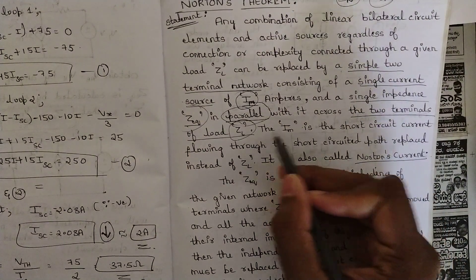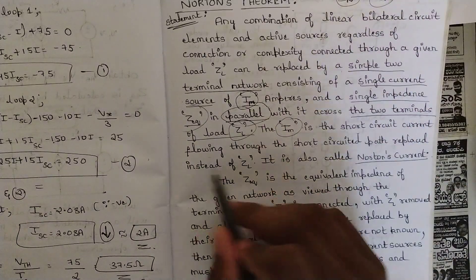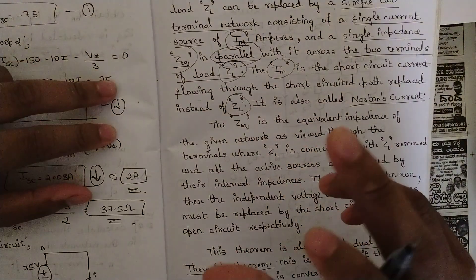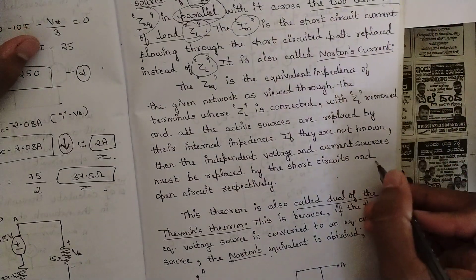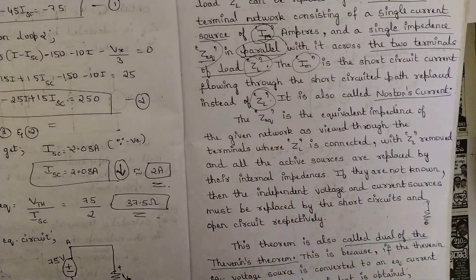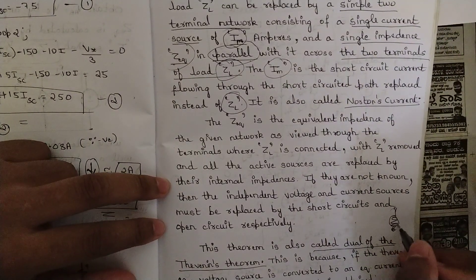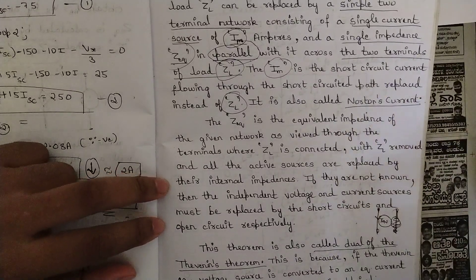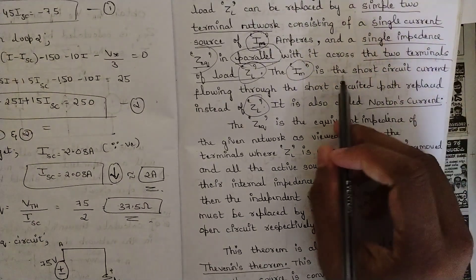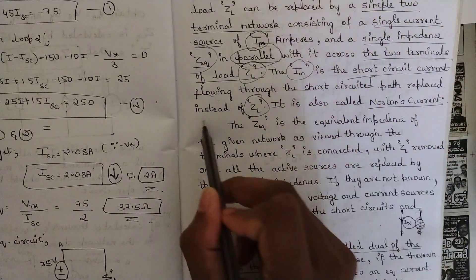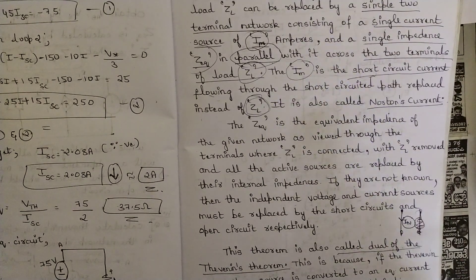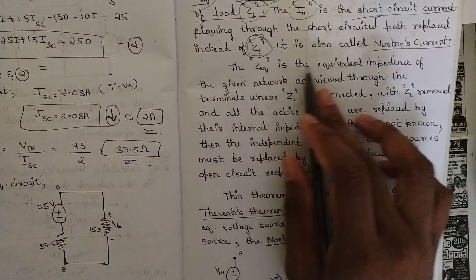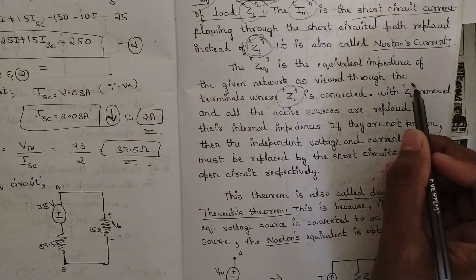The Norton current IN is the short-circuit current flowing through the short-circuited path that replaces ZL. This is the opposite of what we do in Thevenin's theorem. In Thevenin's theorem, we remove the load resistance branch (open circuit) to find Vth. Here, instead of opening the branch, we remove the load resistance and replace it with a short circuit, and the current through that path is named IN.